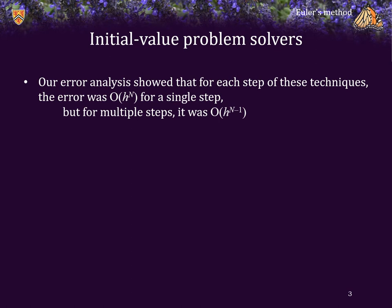Now, in the last three lectures on Euler's, Heun's, and the fourth order Runge-Kutta method, our error analysis showed that if the error of a single step was h to the n, then if we applied this same algorithm or method multiple times, the error was now reduced to order h to the n minus 1 in each case.